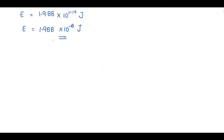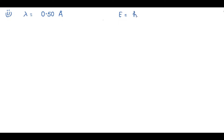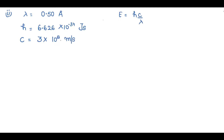Now for the second problem, we are given wavelength λ = 0.50 angstrom. The formula is E = hc/λ, where h = 6.626×10⁻³⁴ J·s and c (velocity of light) = 3×10⁸ m/s. However, the wavelength is in angstroms while the velocity of light is in meters, so we need to convert units.